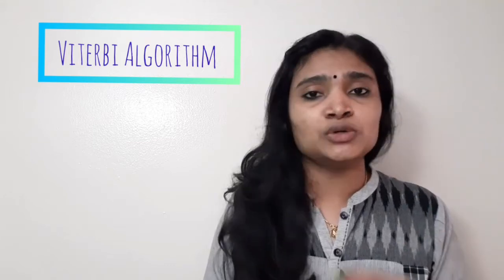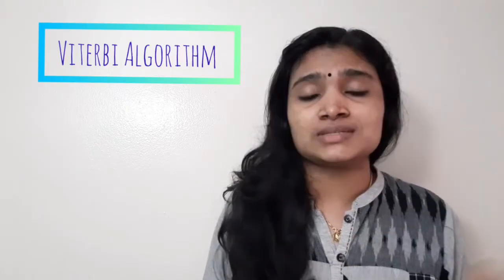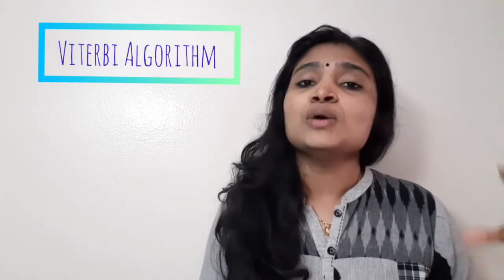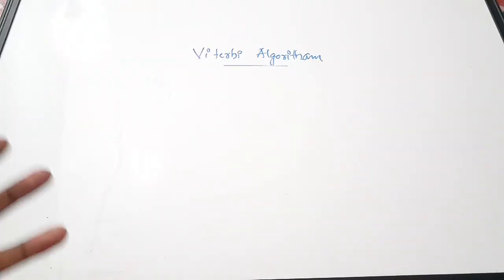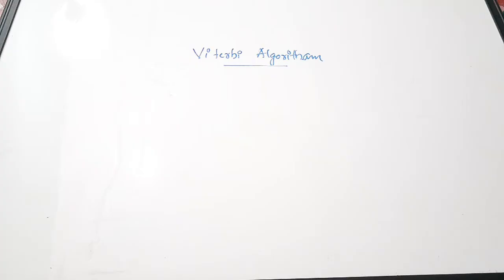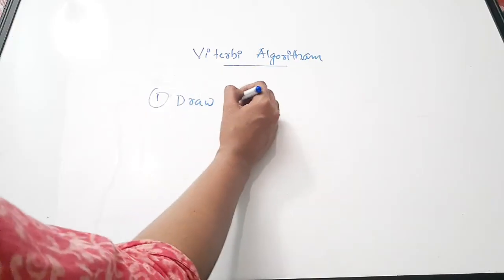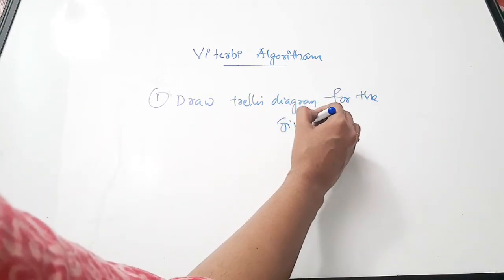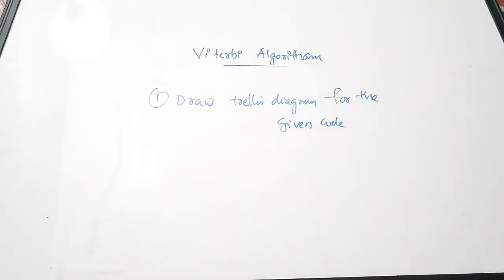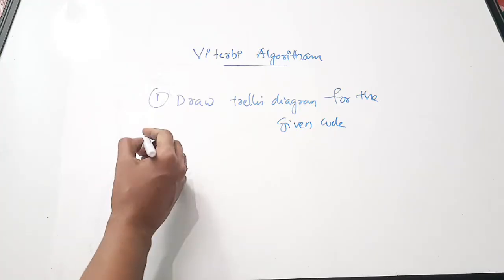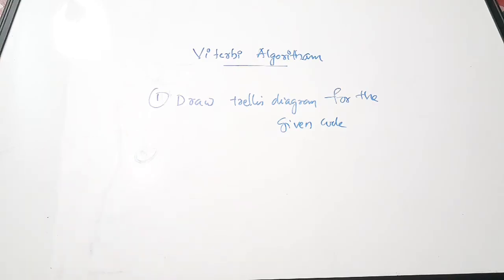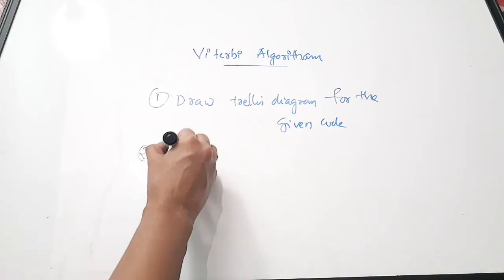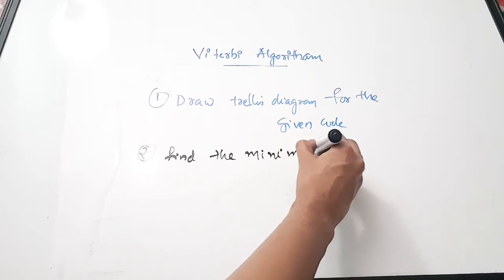In this video we are going to see how to perform decoding using the Viterbi algorithm, using the same Trellis diagram drawn in the previous video. So first, let us see what we have to perform in order to decode a convolutional code with the help of Viterbi decoding. The first step is to draw the Trellis diagram for the given code. The second step, which is a very important step, is to find the minimum distance path.